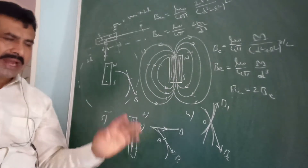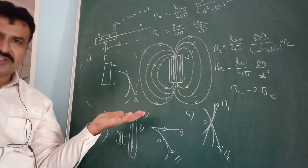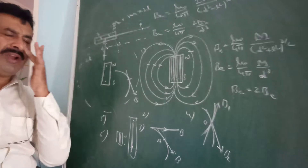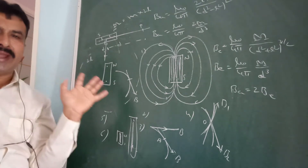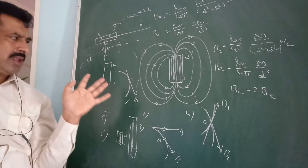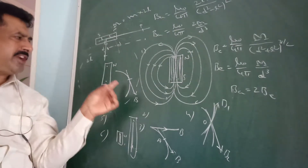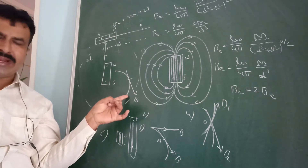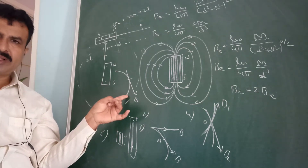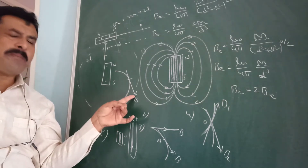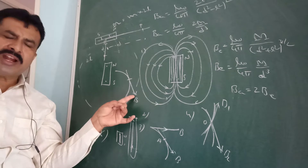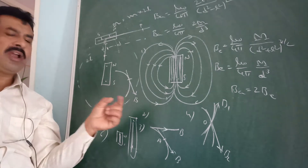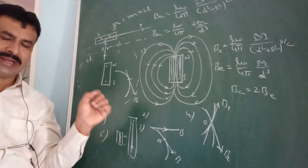Just as electric fields have electric field lines, magnetic fields have magnetic field lines. The tangent drawn to the imaginary curved line which gives the direction of the magnetic field at that point is called a magnetic field line.